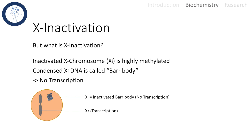But what is X inactivation and how does it work on a molecular level? The inactivated X chromosome is highly methylated, making it transcriptionally inactive. The inactivated X chromosome, also called the Barr body, is tightly packed condensed DNA, which is also called heterochromatin.